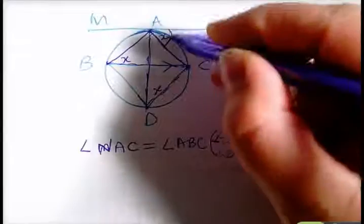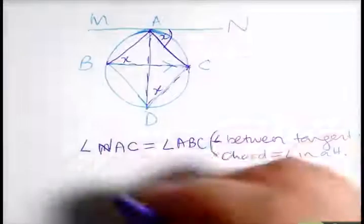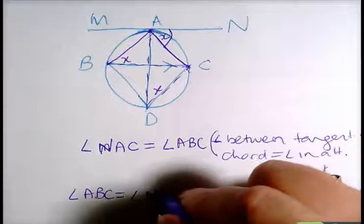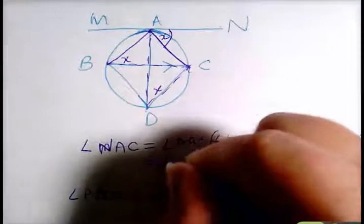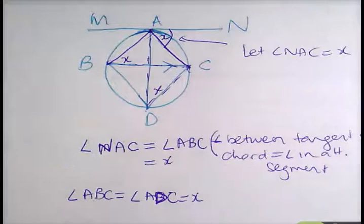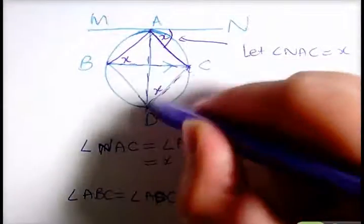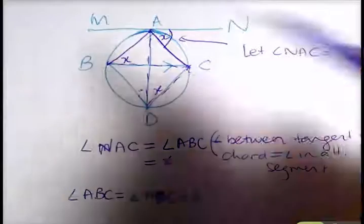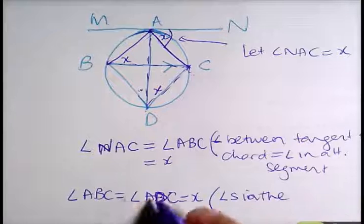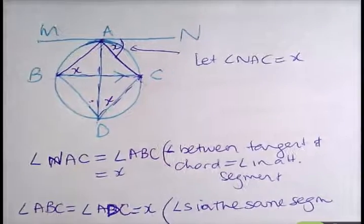You can use the same reason for why angle NAC equals angle ADC, or you could just say that angle ABC equals angle ADC. Let angle NAC equal X, so then these two are both equal to X. We're trying to show that AD bisects angle BDC, so we've got to show this is X as well. The reason is angles in the same segment, or angles standing on the same arc, are equal.